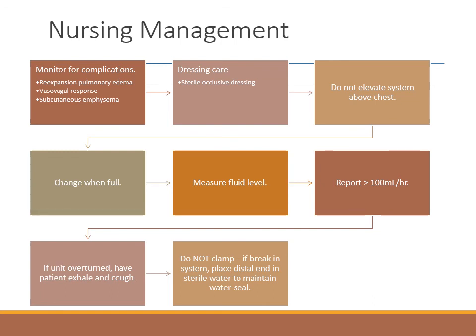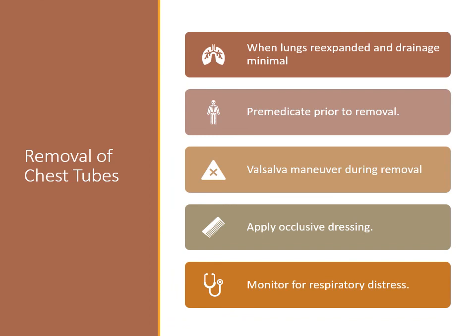Appearance of a new air leak warrants assessment of the drainage system to identify if the air leak is coming from the patient or the system. Although controversial, some clinicians clamp the chest tube for a few hours prior to removal to assess how the patient will tolerate removal. Generally, this occurs 4 to 6 hours before the tube is removed and the patient is closely monitored for signs of respiratory distress. Chest tubes are removed when the lungs are re-expanded and fluid drainage has ceased or is minimal. Generally, suction is discontinued and the chest drainage is on gravity drainage for 24 hours before the tube is removed.